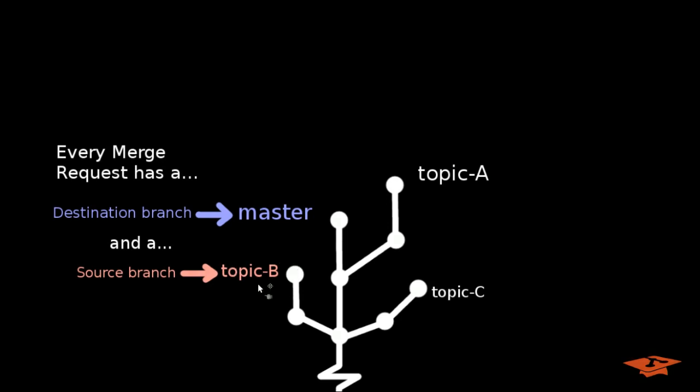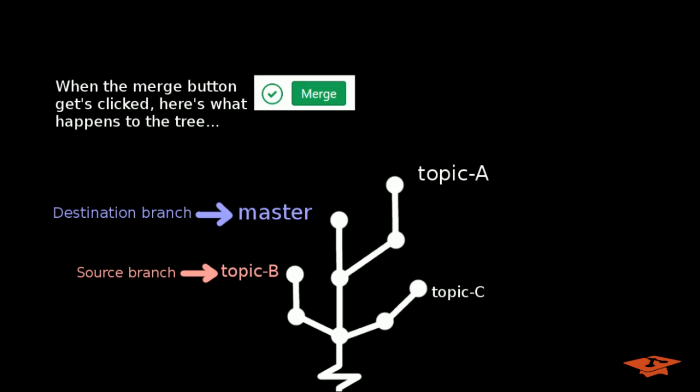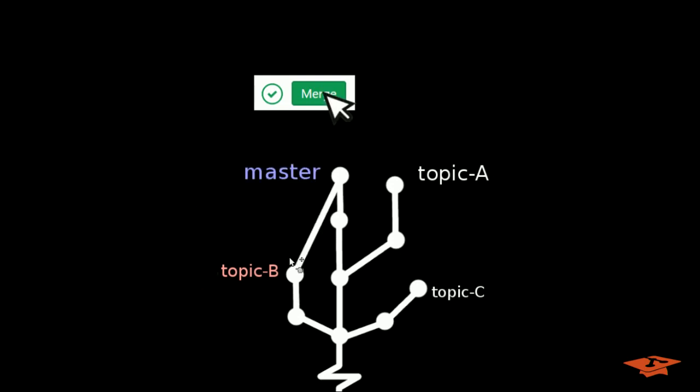So for example, topic B is the source branch. In this example, master is the destination branch. And when a merge happens, meaning the merge button itself is clicked on the merge request page, the content of topic B is merged into master. Master moves one commit ahead from where it was before. And that's what happens in a typical merge when you click the merge button.